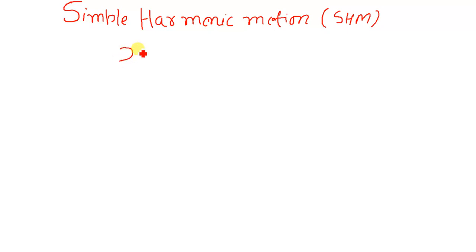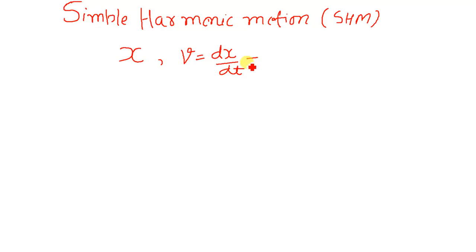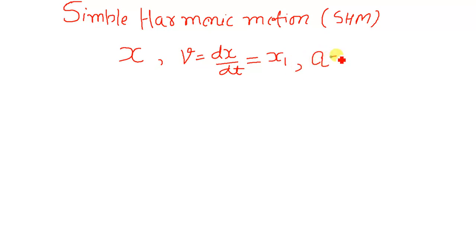If x is the displacement from mean position and v is the velocity, which is equal to dx/dt — the first derivative of x — then in OpenModelica I will not be using the symbol v for velocity. I will be using the symbol x1, which means it is the first derivative of x with respect to t. The acceleration of SHM is given by d²x/dt².